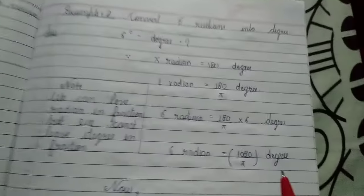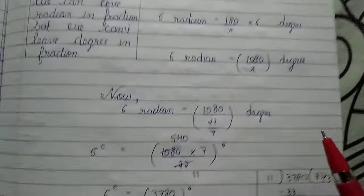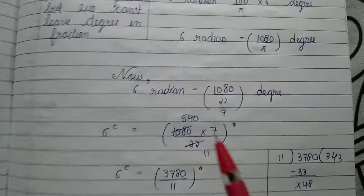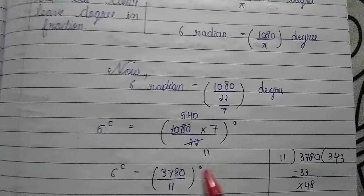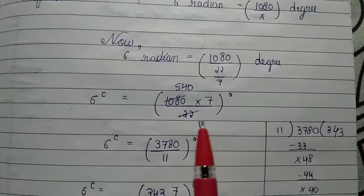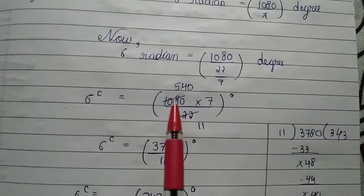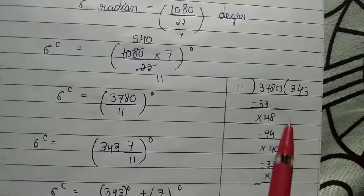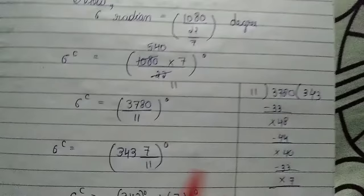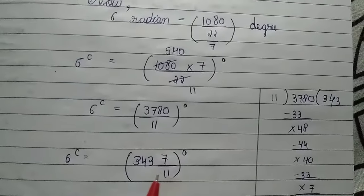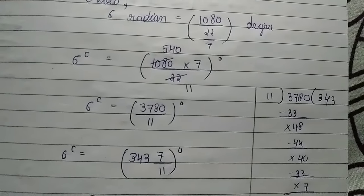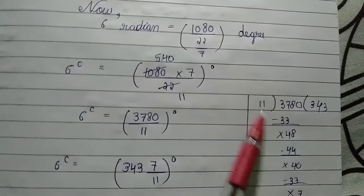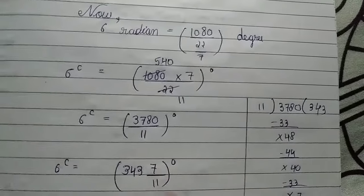Now we have to put the π value. We have to divide 1080 upon 22/7, so we can change this. If we divide, 22 goes into 1080 by multiplying 343 with remainder 11. The answer is a mixed fraction where we write the remainder, the dividend, and the quotient here.